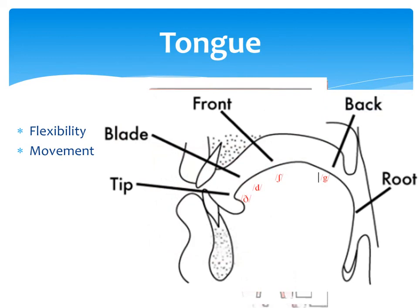The tongue has mainly five parts: it has the tip, the blade, the front, the back, and the root.